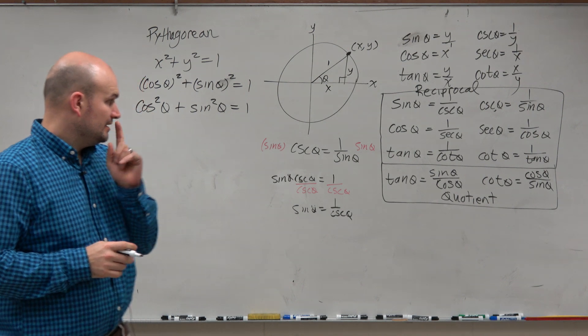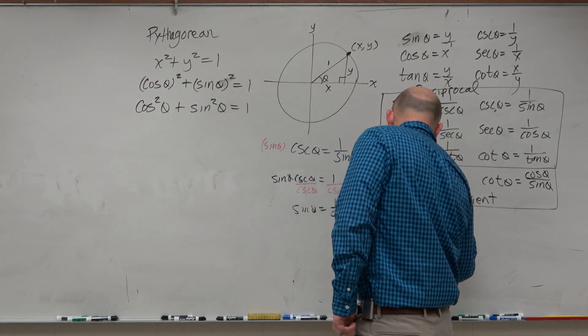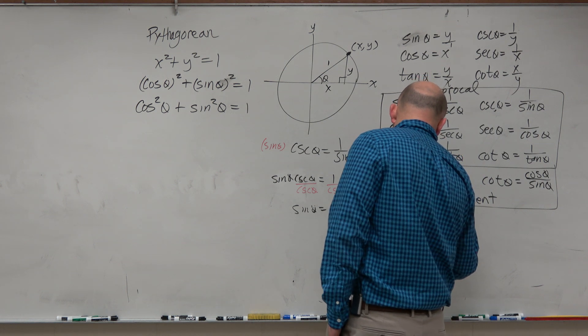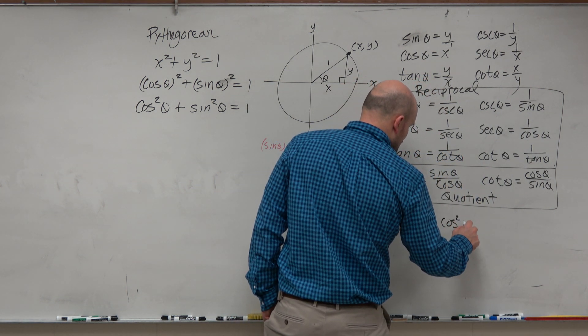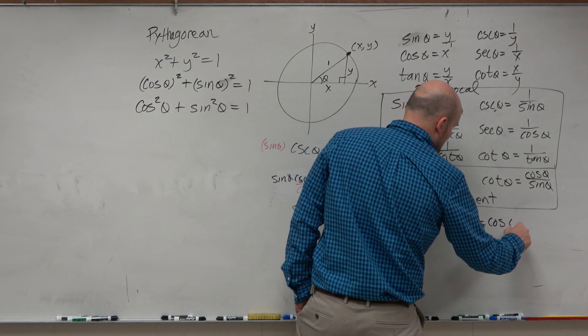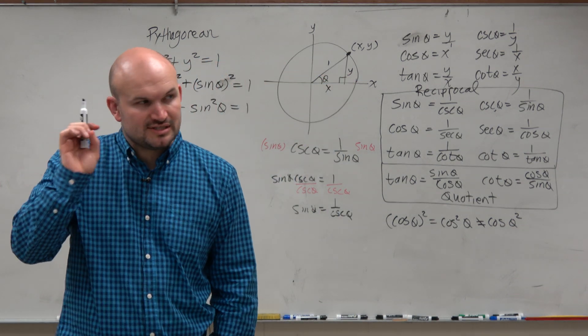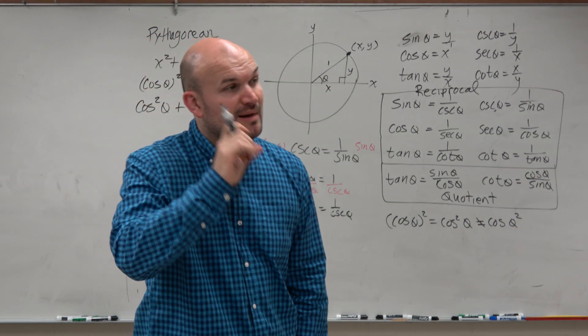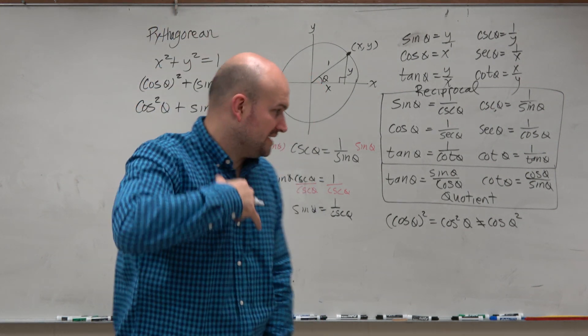Now, there is something that's very important, guys. Cosine of theta squared is equal to cosine squared of theta, not cosine of theta squared. Because remember, guys, you've got to understand the trigonometric functions. It's a trigonometric function of something. It's sine of something.